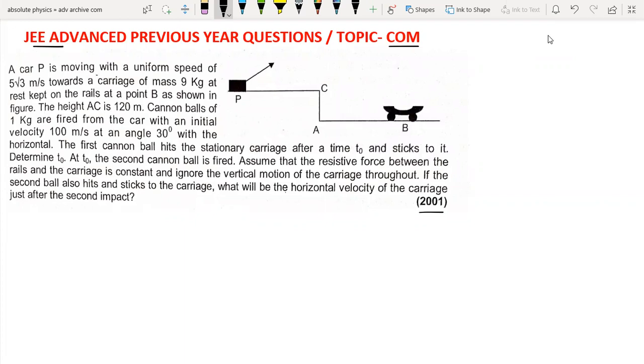A car is moving with uniform speed 5√3 meter per second toward a carriage of mass 9 kg at rest kept on the rails at point B. The height of AC is 120 meters. Cannon balls of 1 kg are fired from the car with initial speed 100 meter per second at angle 30 degrees.